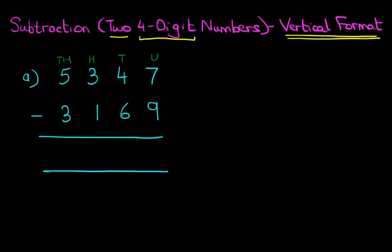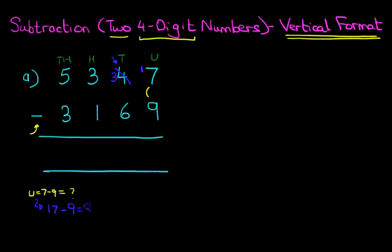We are now ready to do the subtraction. Starting on the right-hand side, we've got 7 minus 9. 7 minus 9 is something we cannot do because 7 is smaller than 9. Therefore, we're going to take 1 from the tens on its left. So let's cross out the 4. 4 minus 1 is 3. The 1 we have taken from there, we're going to add it to the units column. Therefore, the units has now become 17 minus 9. 17 minus 9 is 8. Let's write this down.